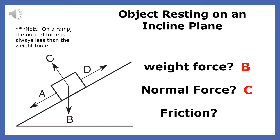The normal force is always drawn perpendicular to the surface where the box meets the ramp. D is the friction force and is the force that opposes the downward motion of the box. A is not a force that acts on the body.